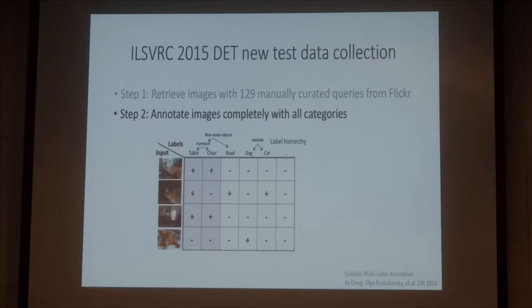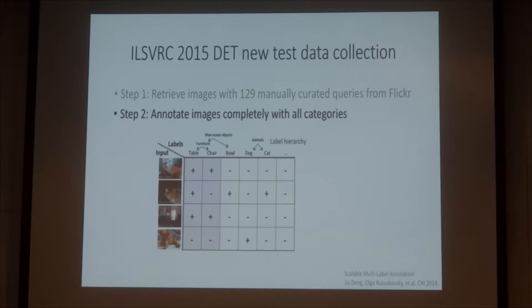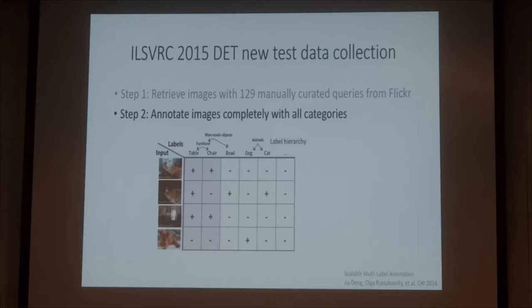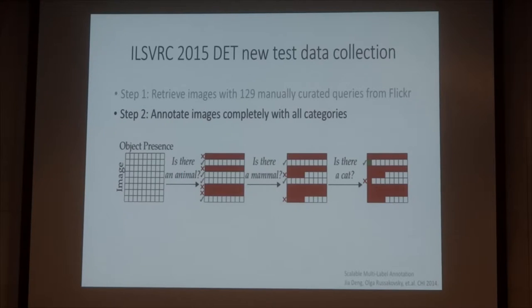Because in ImageNet, you have a hierarchical structure of your classes, and most of the labels in the image are very sparse. So if you want to label every 200 categories, it's very extensive. So we use the hierarchical structure of the label space to speed up the labeling process.